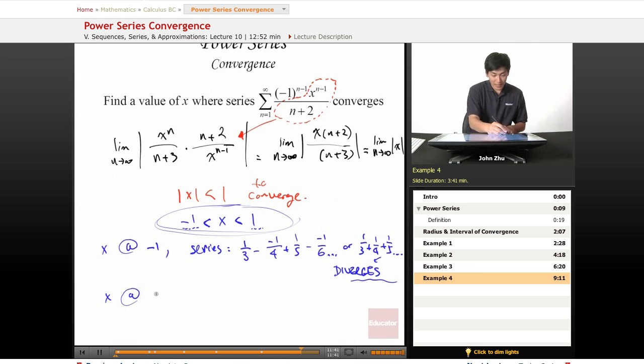Now let's look at x = 1. The series becomes 1/3 - 1/4 + 1/5 - 1/6... This is an alternating convergent series, so it converges.